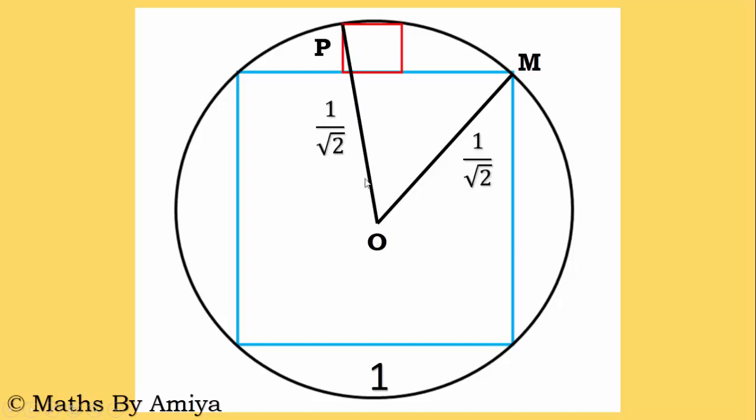So we can also draw OP line. O is the center, P is a point on the circle and touching the red square at the vertex. So OP is also the radius, and the radius we know is 1 by root 2. So we can say OP is also 1 by root 2.